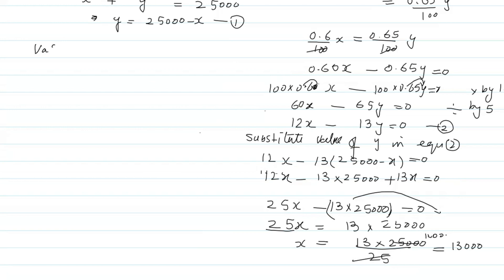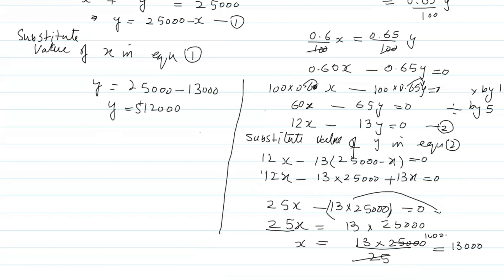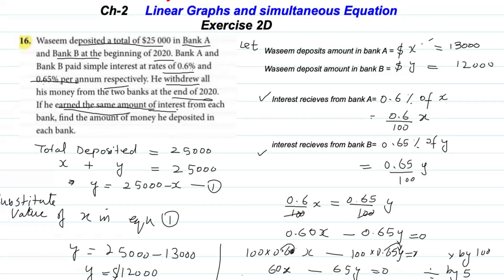Substituting value of x in equation one: y = 25,000 − 13,000 = 12,000. So y = $12,000. And x = $13,000. This is our answer: Waseem deposited $13,000 in Bank A and $12,000 in Bank B.